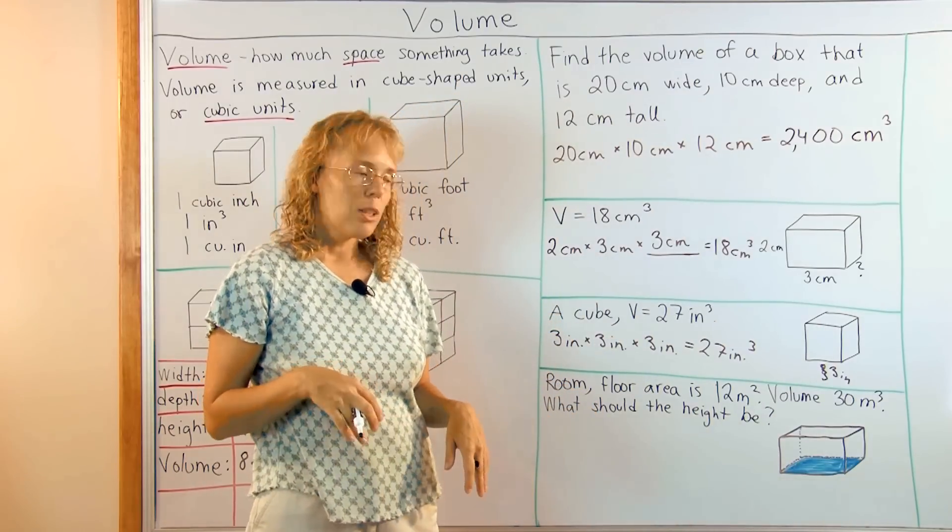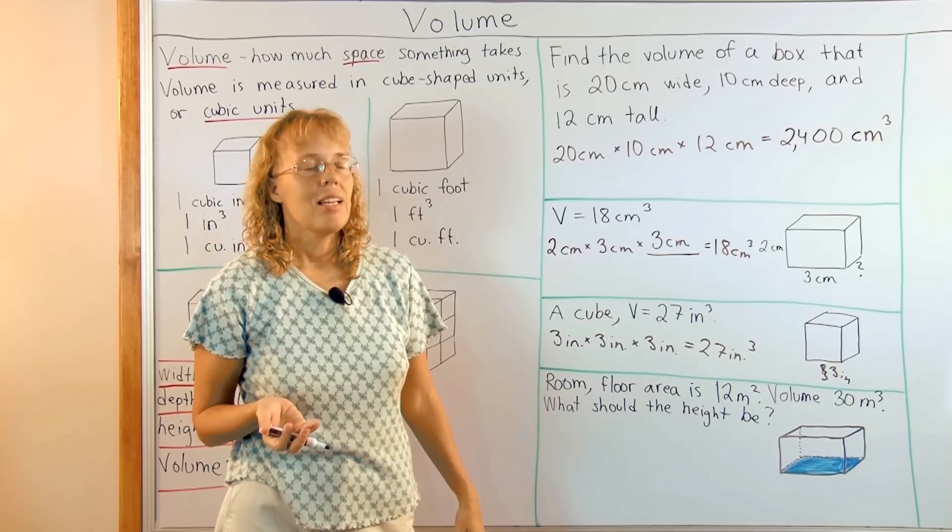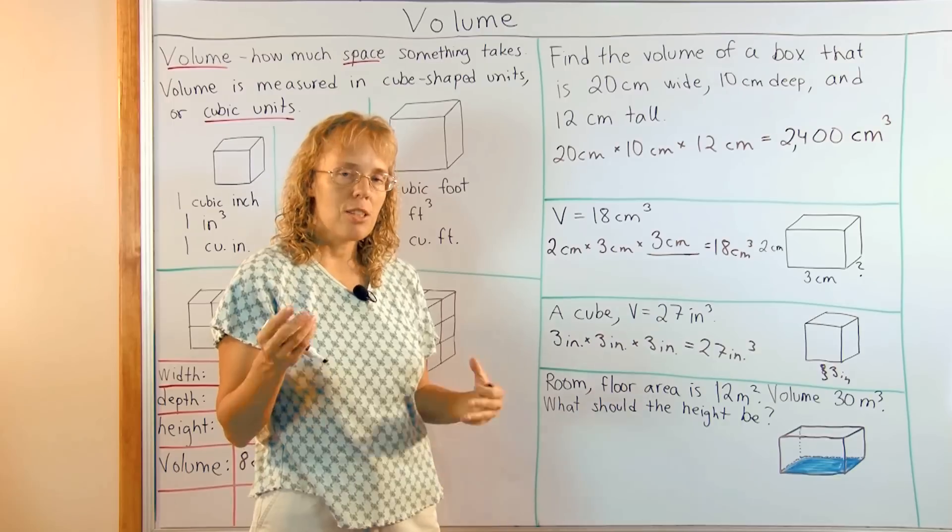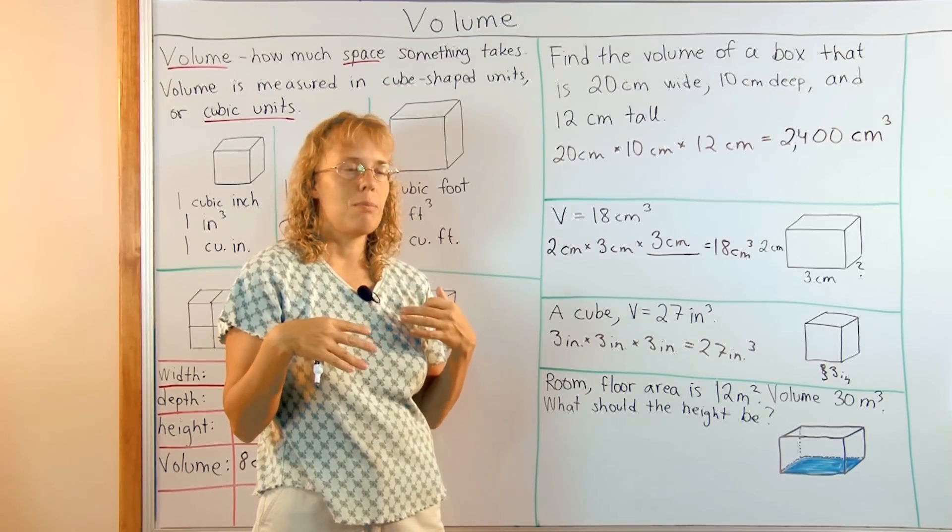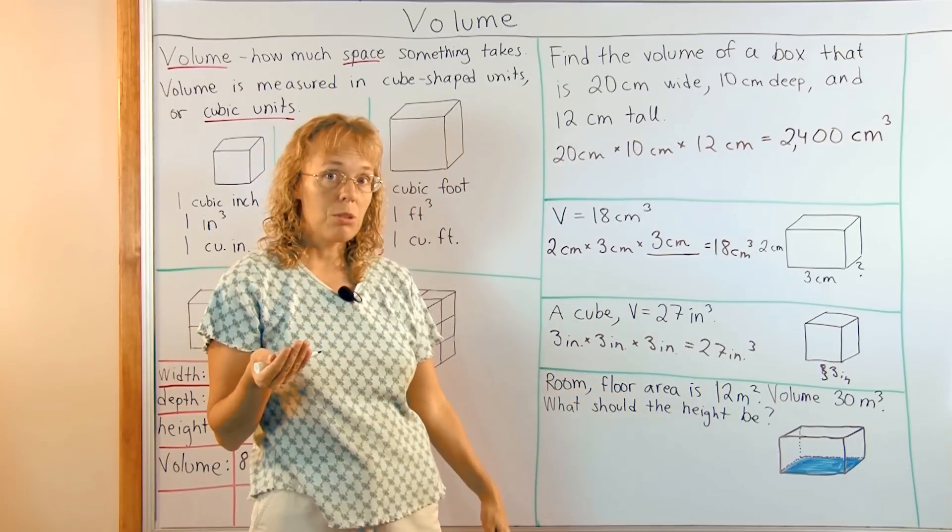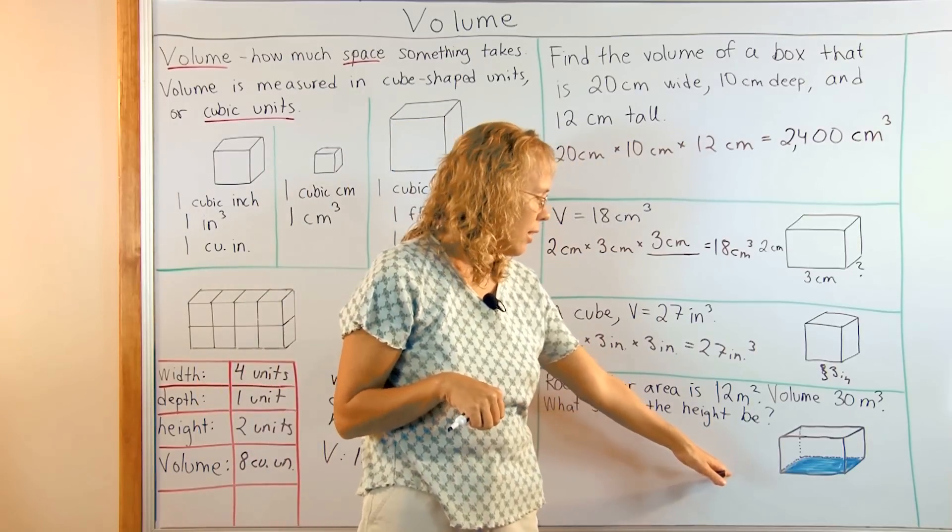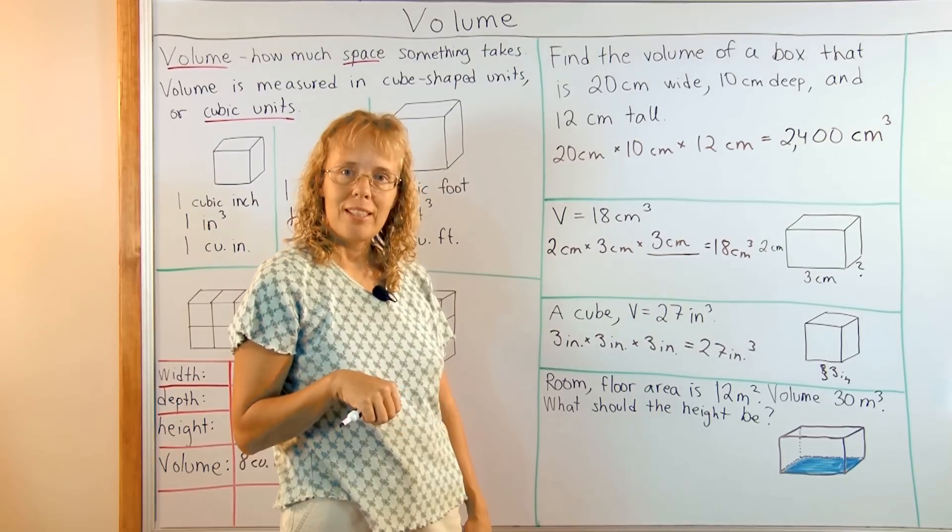And lastly, a problem that again is not asking for the volume. It is a little different from these two, again, because it does not give us the width, the height. The depth. It does not give us those numbers. It is asking for the height. What should the height be of this room? And it is not giving us the width or anything else. It is giving us the area. So, how do we go about that now?